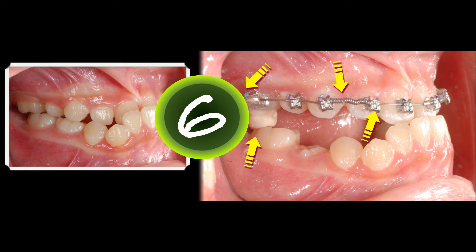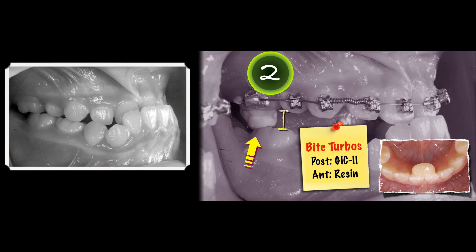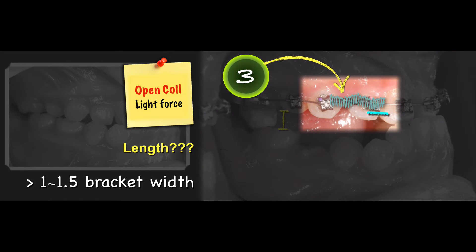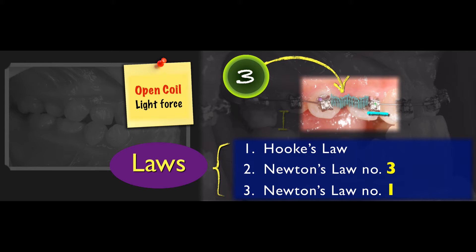There are six keys to do that. Number one: because we tend to flare the upper incisor, I decided to use low-torque brackets on top. Number two: I use bi-turbo posterior and anterior to solve the deep bite and anterior crossbite. Number three: I will use nickel-titanium open coil spring to open up space with light force for the canine. When I say light force, I invite you to use just one-third of the spring. This follows Hooke's law. When I put the open coil spring, they create a force, a counterforce — action and reaction — that follows Newton's Third Law.